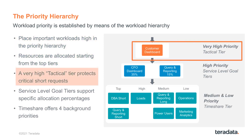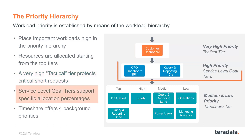There are predefined tiers that make it easy for you to put your high priority work at the top. There is a tactical tier, which is given an extremely high priority — any work that you want to run in a couple of seconds or sub-second belongs there. Then we have a service level goal tier for high priority work, where you can actually assign a percent of resources allocated to that particular workload.